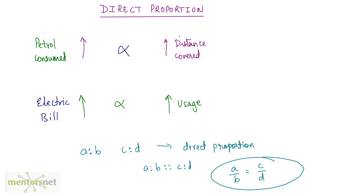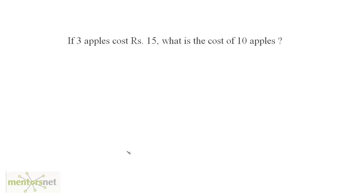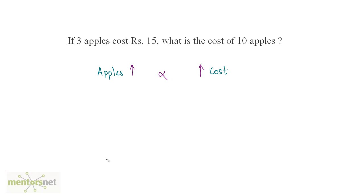Now let us solve a problem involving this. We have three apples whose cost is 15 rupees. What is the cost of 10 apples? Here there are two quantities: one is apples and another is cost. When you increase the number of apples, the cost also increases. This means that this is a direct proportion.